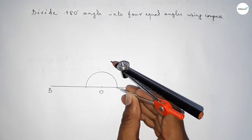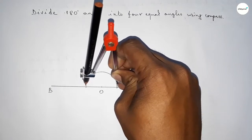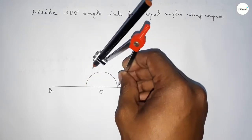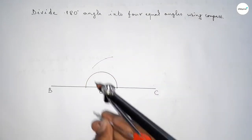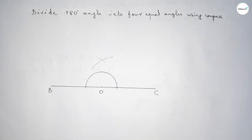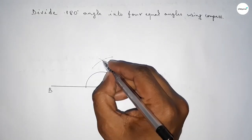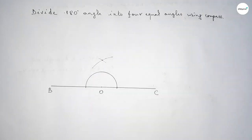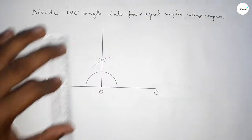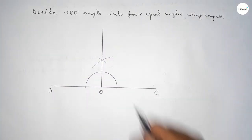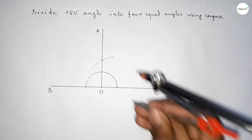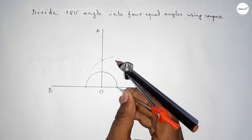Now we have to bisect this angle. Taking a length and drawing an arc, then with the same length cut here. So bisecting the 180 degree angle and joining this line, taking here point A.